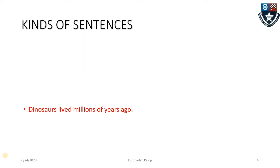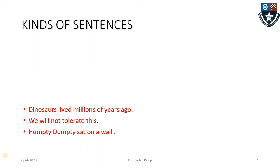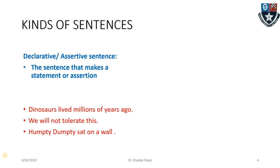There are varieties of sentences. For example: 'Dinosaurs lived millions of years ago,' 'We will not tolerate this,' 'Humpty Dumpty sat on a wall' — these are called declarative or assertive sentences. The words themselves are self-explanatory: we are declaring something or asserting a fact or opinion. A sentence that makes a statement or an assertion is the simplest definition, and it should end with a full stop.